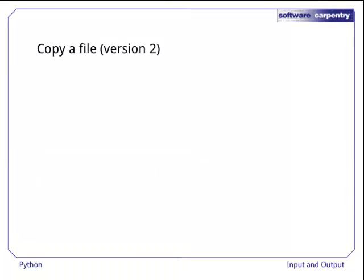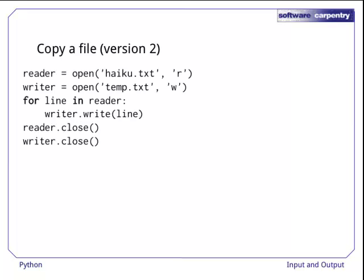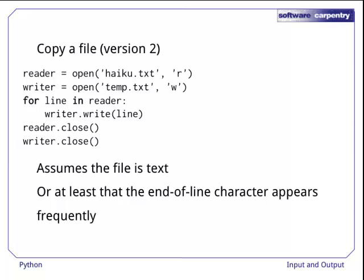Here's another version that will work for a terabyte, provided it's a terabyte of text. After opening both files, we read the input a line at a time, writing data out as we go, then close both files. This does assume the file is text, though, or at least that the end of line character appears fairly frequently. If it doesn't, ReadLine may be asked to read an enormous block of data into memory, which gets us back to our can't read a terabyte problem.